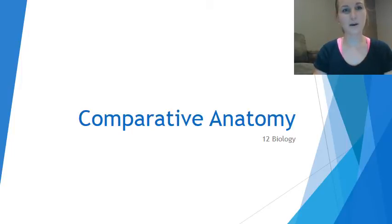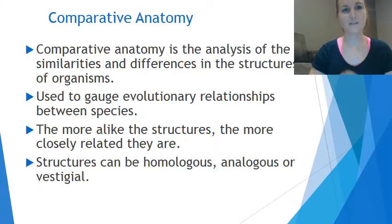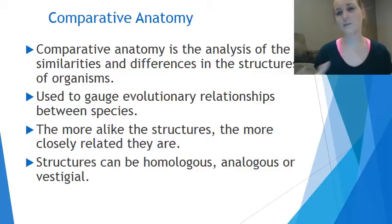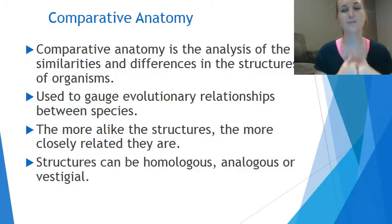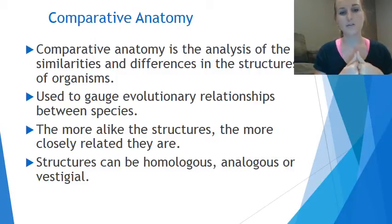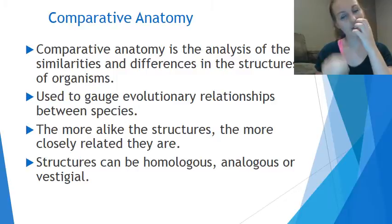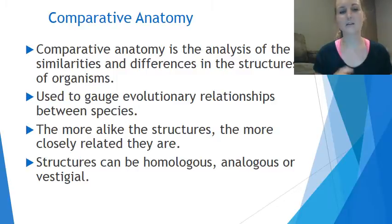Today we are looking at comparative anatomy. We use comparative anatomy to look at the similarities and differences in the structures of various organisms. Through this we can gauge evolutionary relationships — we can see if they had a common ancestor. Usually, the more alike the structures are, the more closely related they are evolutionarily speaking.